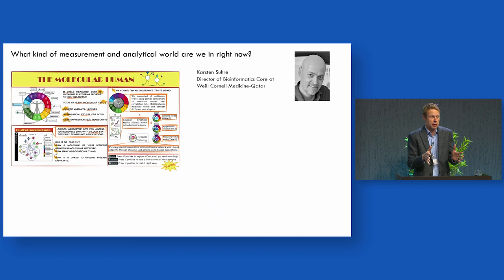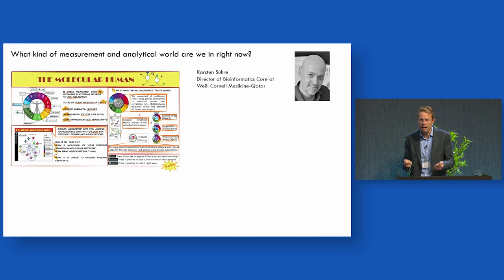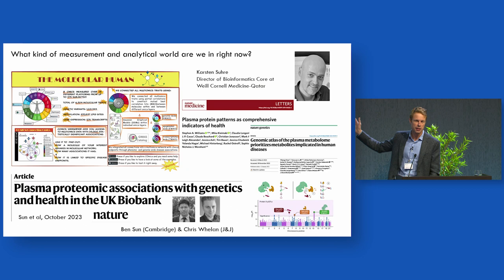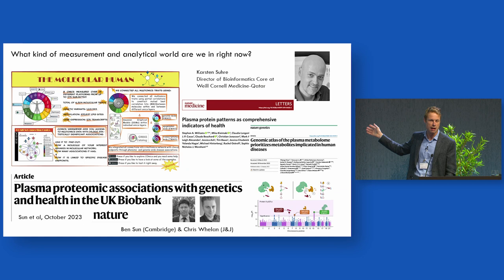People like Karsten Suhr are developing this idea of the molecular human — how much can we measure on people? The Qatar Biobank has a deep catalogue of proteomics, metabolomics, and genetics to try and get at these things. But is that a guaranteed mechanism or insight, or is it just more granular measurement? We now see these catalogues of metabolomics and proteomics, and just this week the publication of genetic associations with proteomic data in UK Biobank on tens of thousands of individuals to help us navigate that.